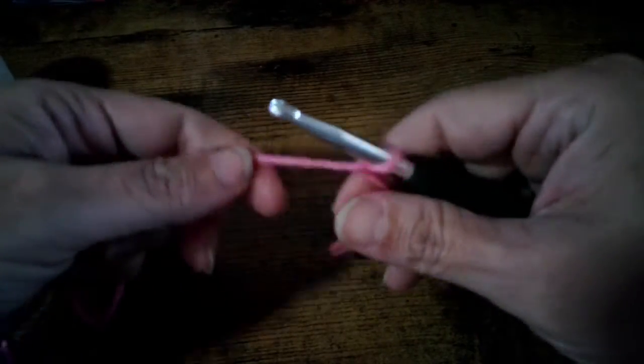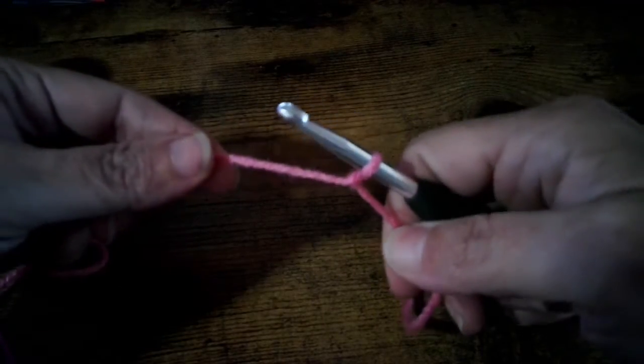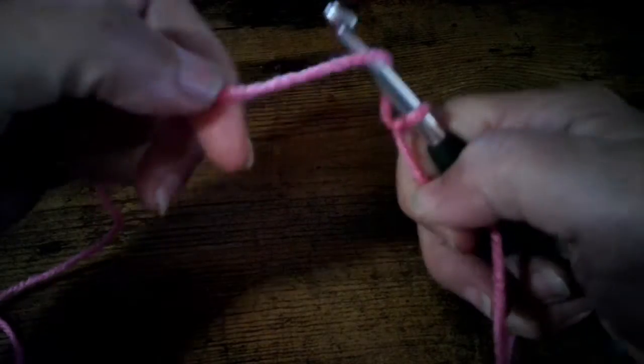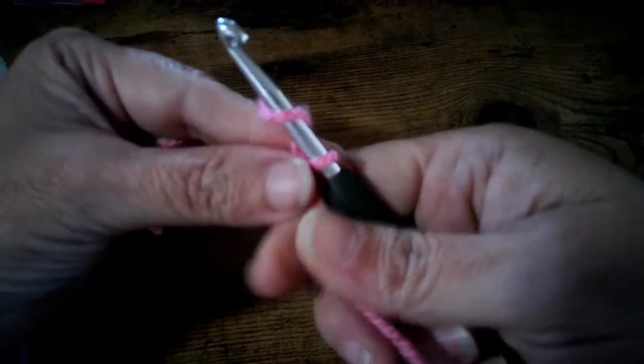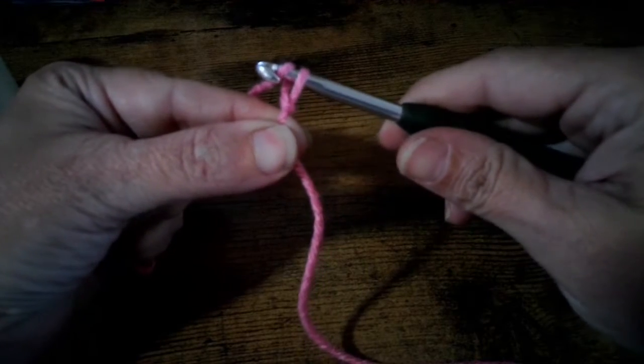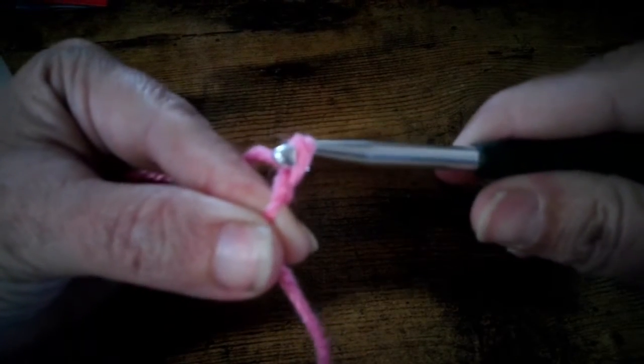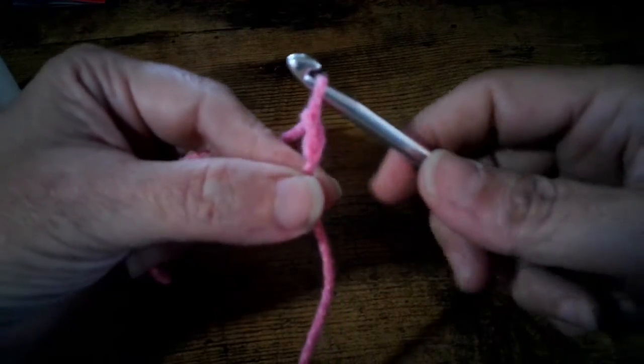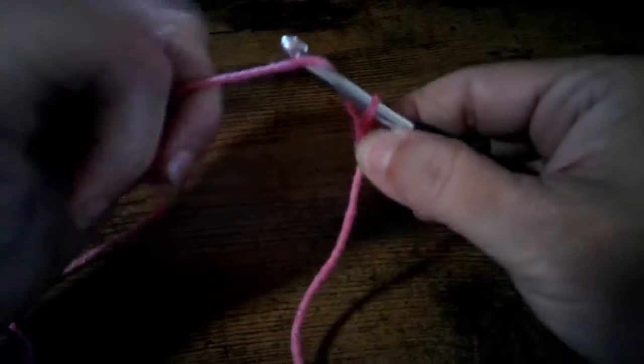Now, how you make the starting chain is you take your working yarn, wrap it over the hook, turn your hook down very slowly, and pull it through that loop. You have made one chain. Wrap the yarn and pull it through.